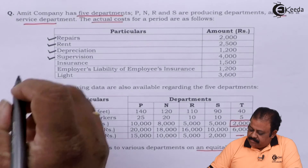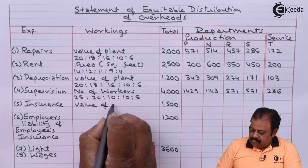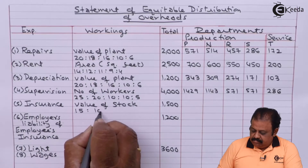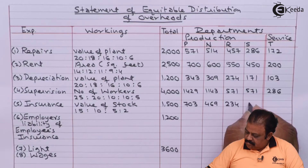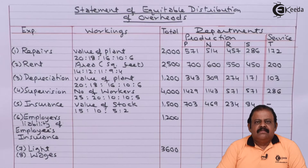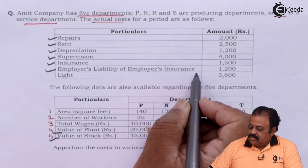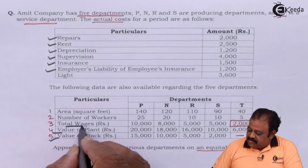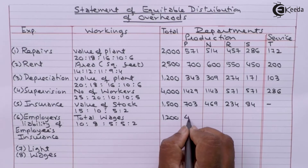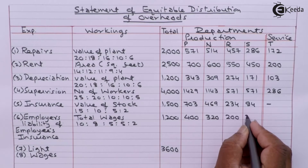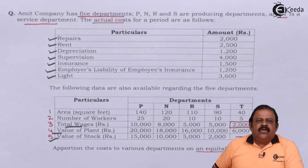Next expense — insurance: this will be allocated based on value of stock. Employers liability of employees insurance: this will be allocated based on total wages. Next expense — lighting: this will be divided on the basis of area.